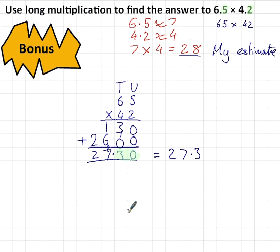It depends whether the question wants the answer to one or two decimal places. Certainly, if it was money, if this was money that we were talking about, then we would keep the 0 in there. 27.30.